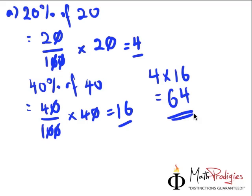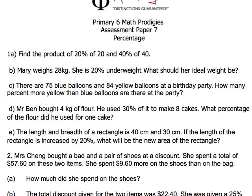So basically, that is all the questions I'm asking you for. Very simple, right? Very easy. You will see as you go along that these questions are actually pretty simple. And let's take a look at the next question. The next question is this, Mary weighs 28 kilograms. She is 20% underweight. What should her ideal weight be?